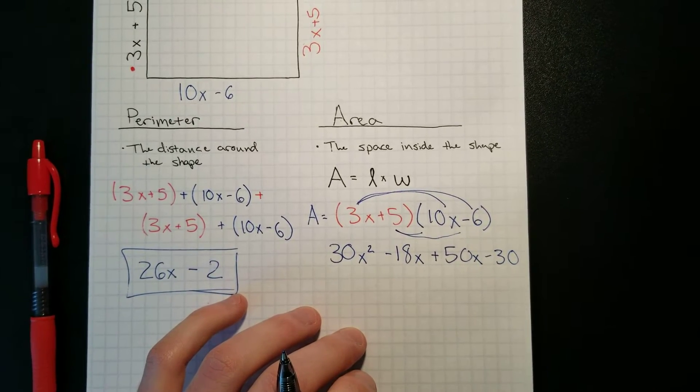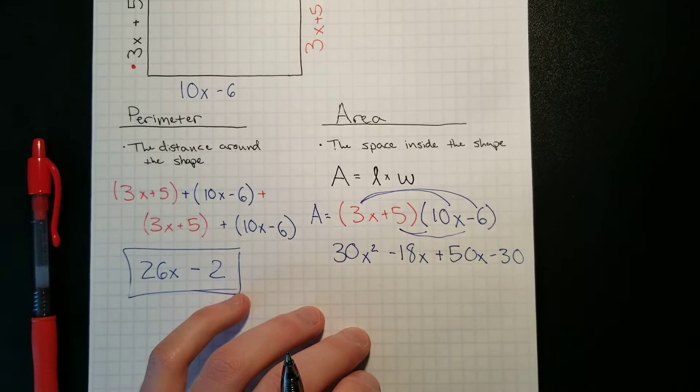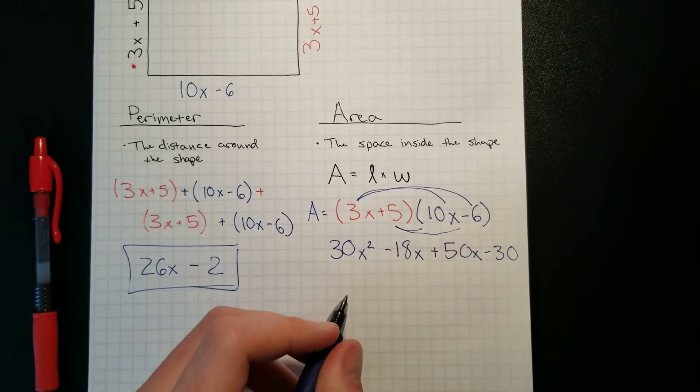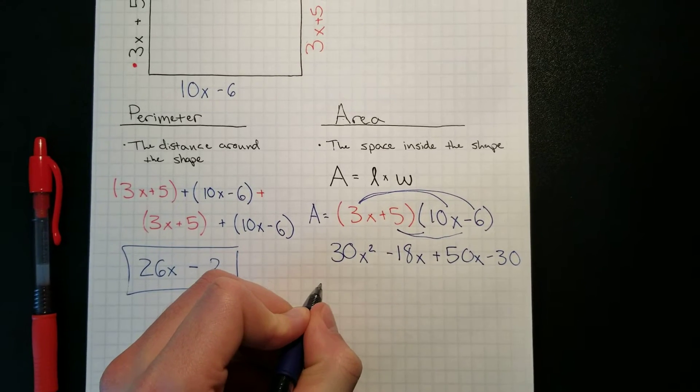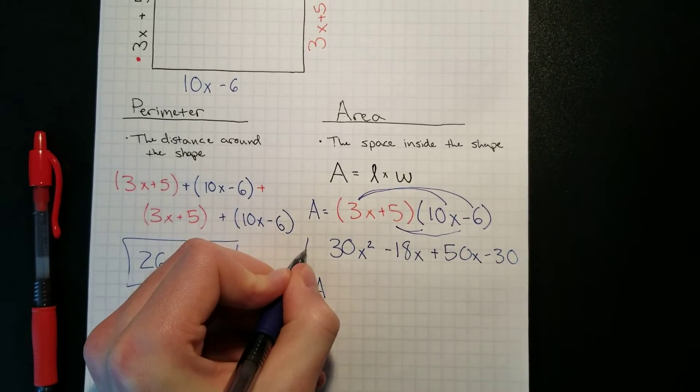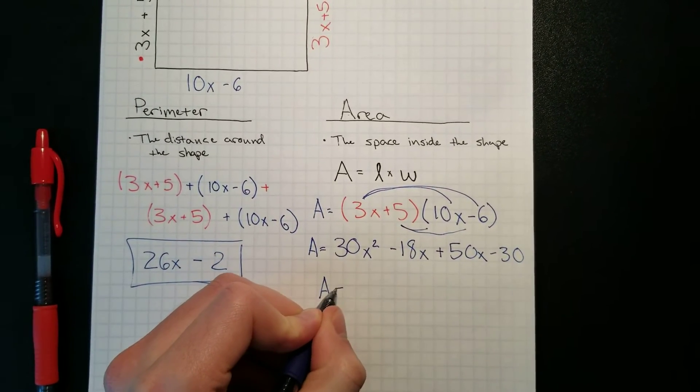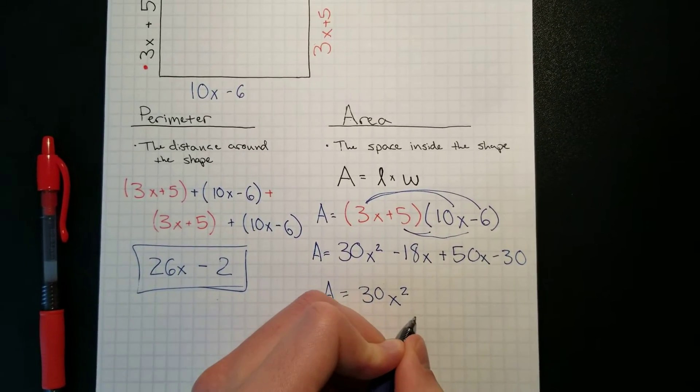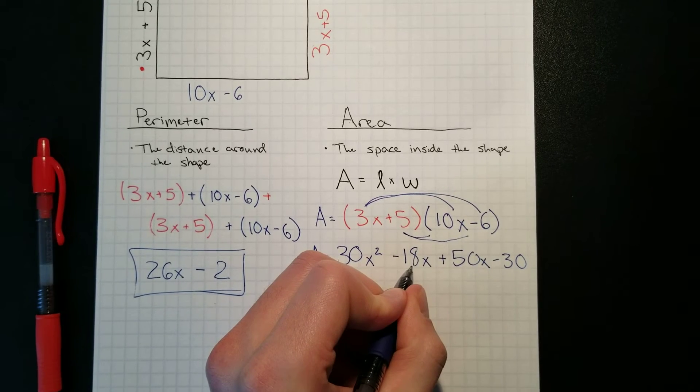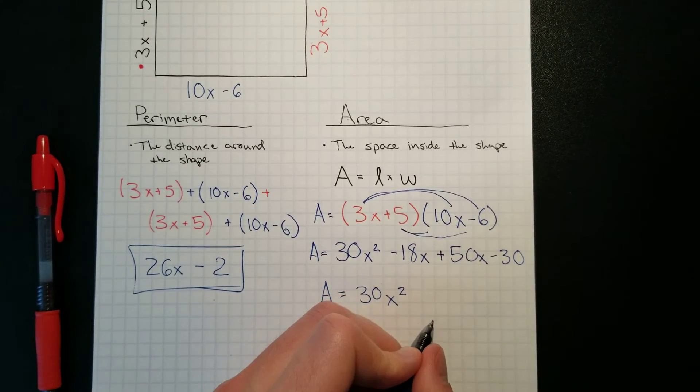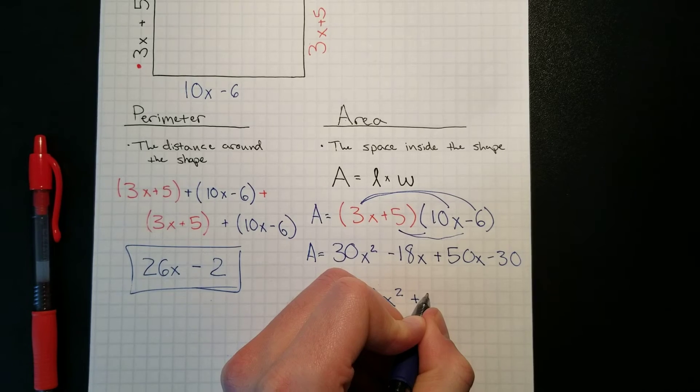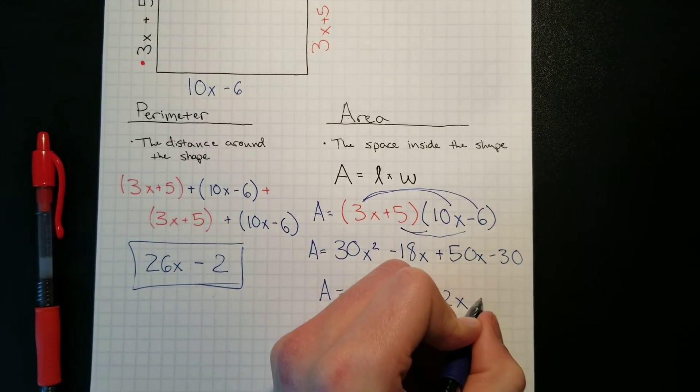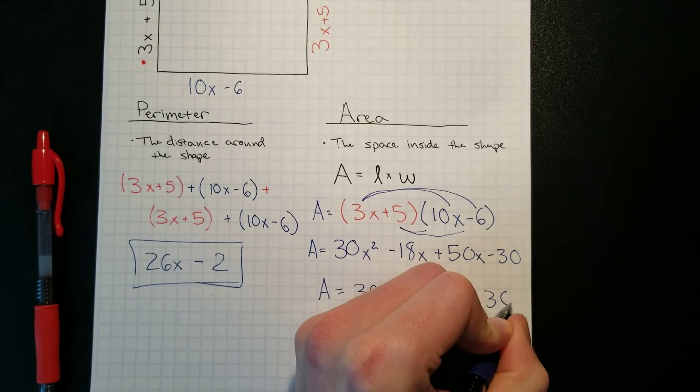So what we have to do now is add up the like terms. There are only two like terms; they're the middle ones. So we carry down our, we'll do a, the area, the area is equal to 30x squared. Negative 18 plus 50, so that is going to be positive 32x minus 30.